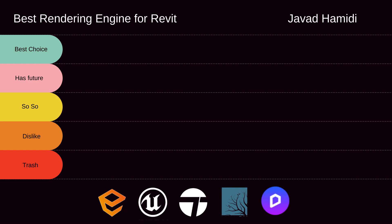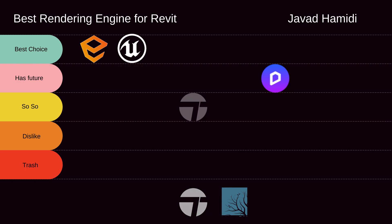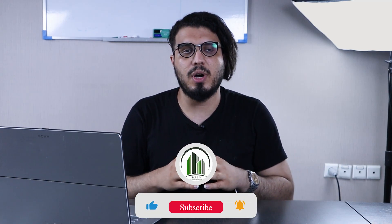For the conclusion: Enscape and Unreal Engine 5 are the best options. Use Enscape for fast, easy work with good renders, and Unreal Engine for photorealistic renders and interactive experiences. D5 Render has a great future ahead. For Twinmotion, I'm neutral — the time investment doesn't yield amazing results compared to UE5 or D5. Lumion is easy to use but the price point is very high. If you want to learn how to import and export models for Unreal Engine 5, check out my other video linked here.